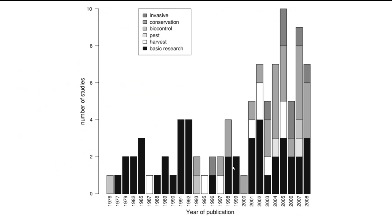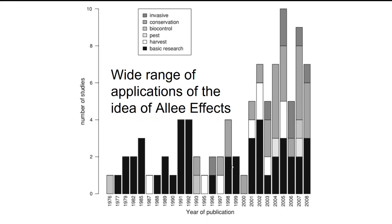As you can see, in the years since Allee effects have been described, their importance has increased. What's interesting about this graph is that it captures the different ways that Allee effects can be important for different groups of organisms. For example, this idea has been applied to invasive species in conservation contexts through biocontrol — our ability to control some organisms using others — as well as in understanding pest species and in better understanding how we can harvest wild populations for various human uses. A lot of work has also been basic research. So there's a really wide range of applications of the idea of Allee effects.